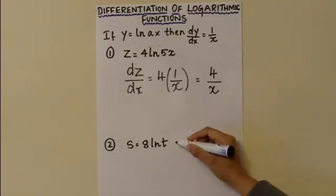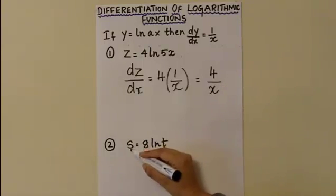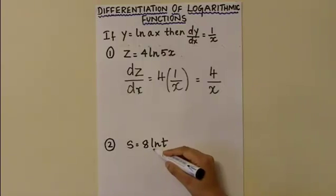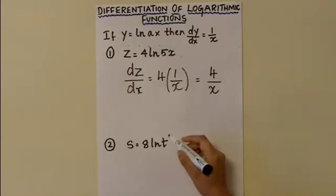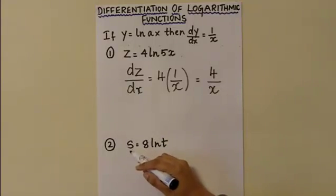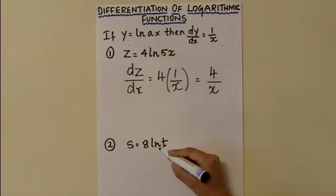Now moving on to the next example where you have s equal to 8 ln t. In this case you can see that a is equal to 1, and the function is differentiated with respect to the variables s and t.